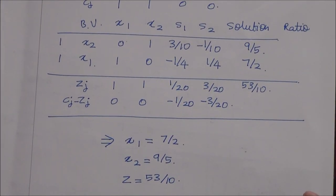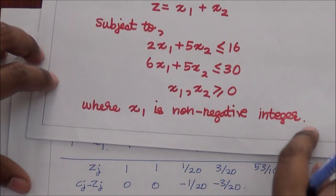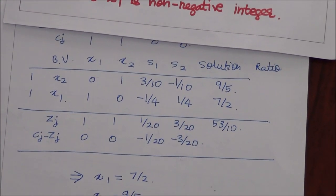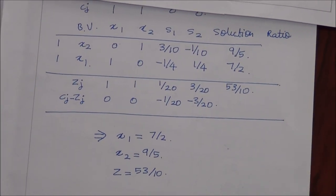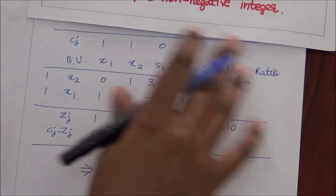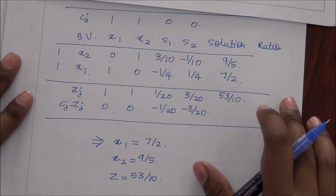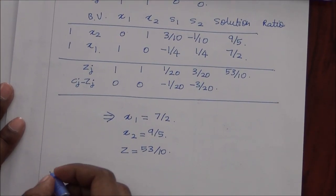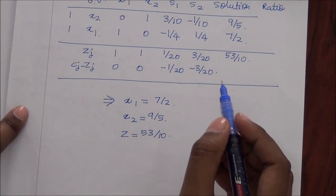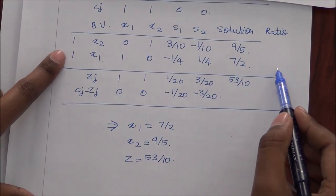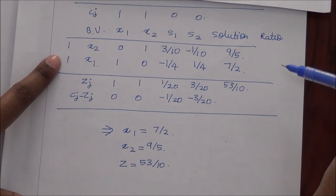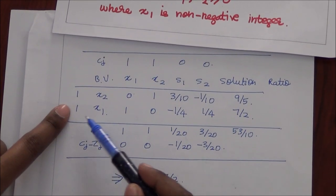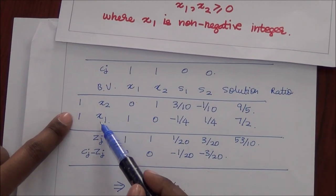But our problem states that x1 is to be a non-negative integer. So we will proceed to compute the Gomory cut, introduce it into this table, and solve the problem using the dual simplex method. In order to compute the Gomory cut, we choose the row that represents the variable we need to be integer — over here, the row for x1.